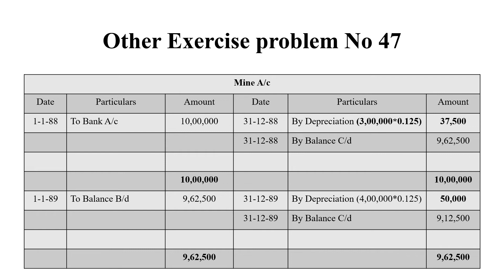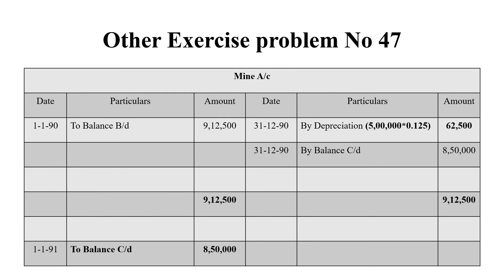Now we have to open a machinery account for 4 years. On 1-1-1990, machinery was purchased — to bank account 50,000 (that is 50,000 plus installation charges minus scrap value). Depreciation for 1990: 2,000 hours × 1 rupee = 2,000 rupees, so balancing figure is 48,000. On 1-1-1991, balance brought down 48,000; depreciation is 4,000 hours × 1 rupee = 4,000 rupees, so balancing figure is 44,000.